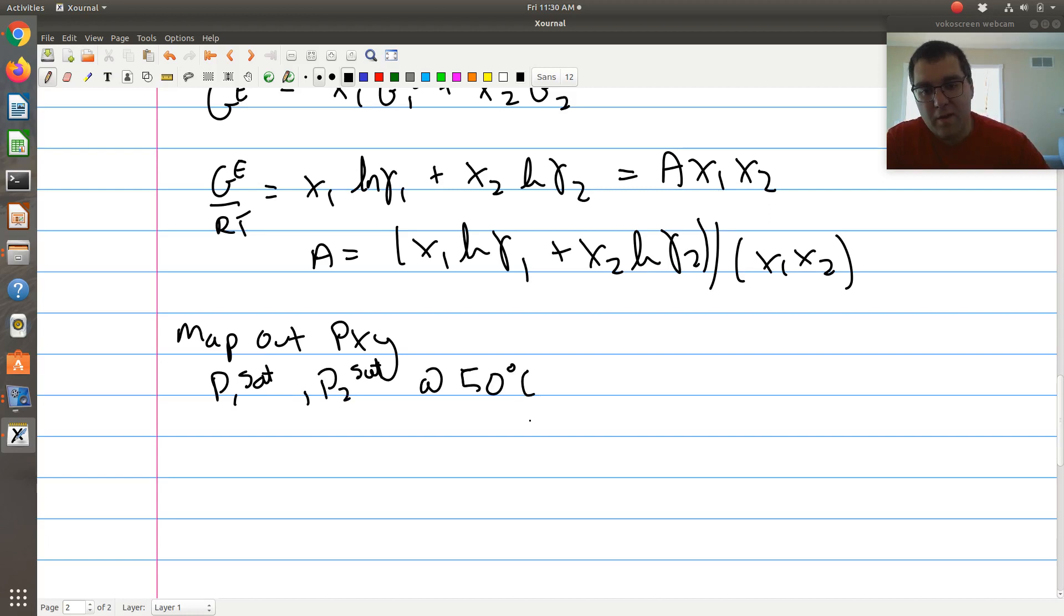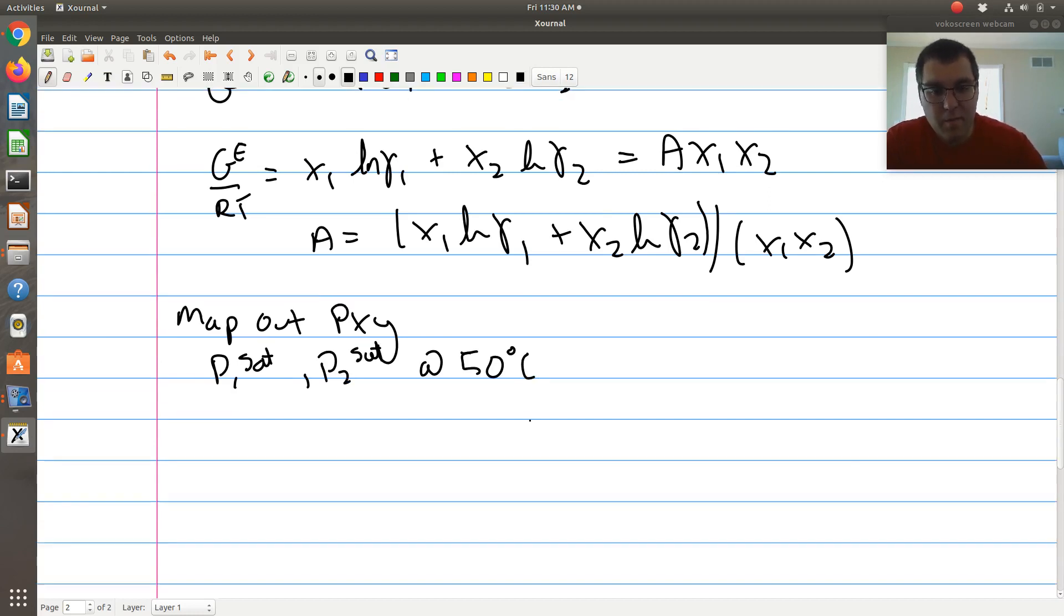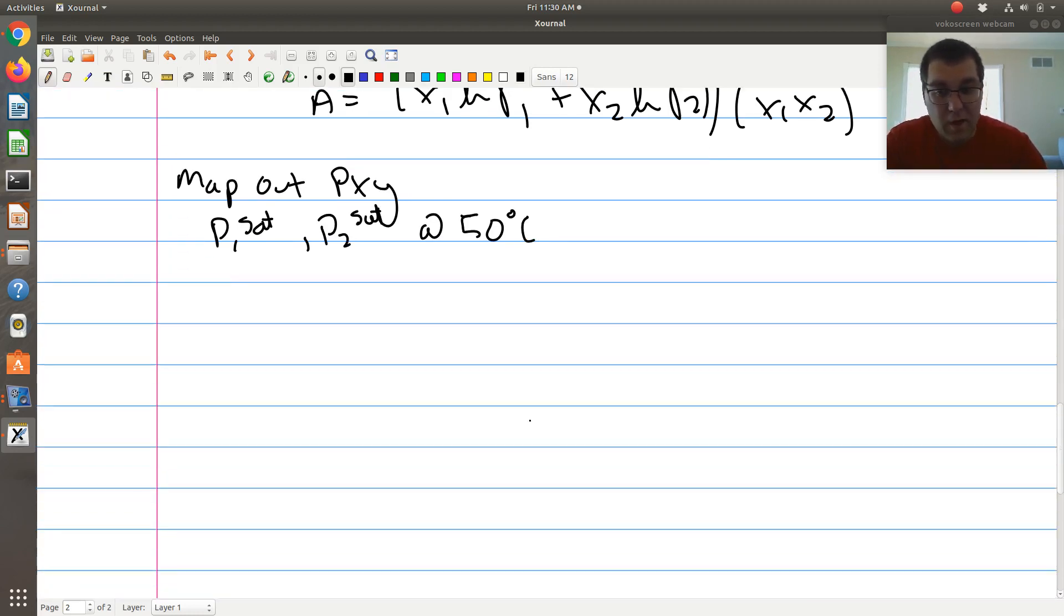So, if I want to map out a PXY phase diagram, if I'm thinking in terms of Excel, in this case, since my GE model is parameterized, it's not all that different than if I were to use Raoult's Law. If I'm thinking in terms of an Excel sheet, what I do is I would set up a column of X1 values to go from 0 to 1. So those are going to be all of the X values at which I want to compute Y, if I'm looking across my PXY phase diagram.